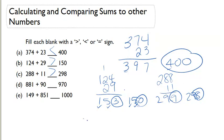Our next problem is 881 plus 90 gives us 1, 17, 971 versus 970. We know that 1 is greater than 0. So 881 plus 90 must be greater than 970.